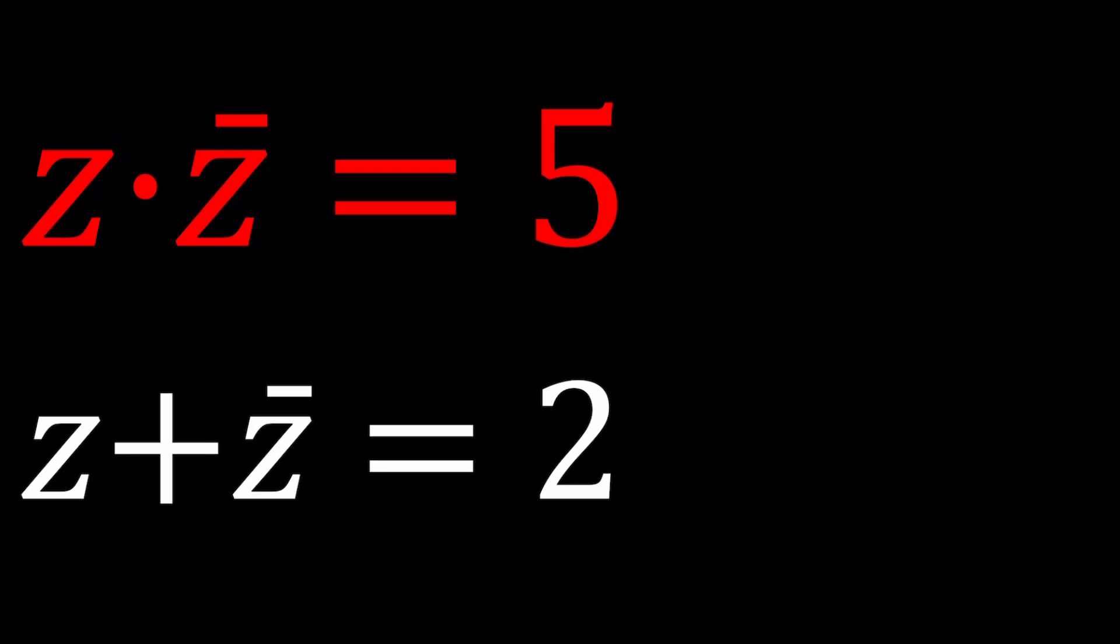Now you might be asking, how is that possible? You're dealing with complex numbers but we don't see any imaginary parts. That's what happens with conjugates. If you multiply two conjugates you get a real number. If you add them you get a real number. So how do we solve this problem? I'll be introducing at least two methods. Let's start with the first one.